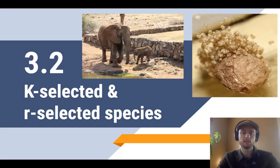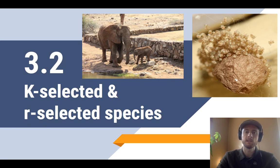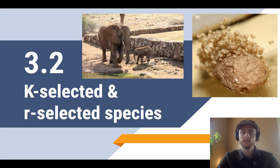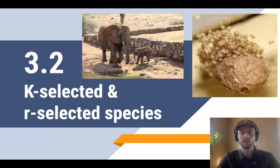On the other hand, R-selected species take the quantity approach to the question of how to pass on their genes. They have many, many offspring in the hopes that at least some of them survive. They generally live much shorter lives and often only reproduce once, so they can't really afford to produce a few offspring and take care of them. They like to really crank out the offspring and just hope that some of them survive. Spiders here are a great example — they're going to have hundreds and hundreds of offspring, leave them to fend for themselves, and just hope that some of them happen to survive.